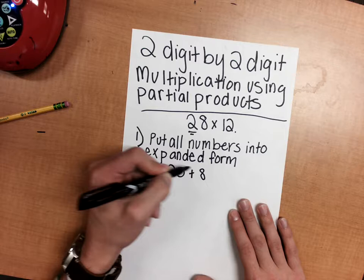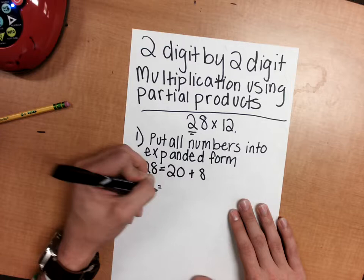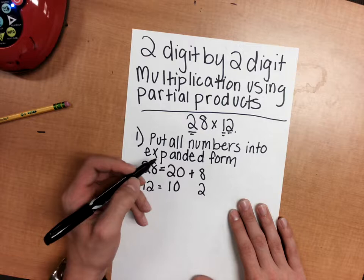Now what about 12? 12 is equal to—well, this 1 in the tens place is 10, and our 2 in the ones place is 2. So 10 plus 2 equals 12.